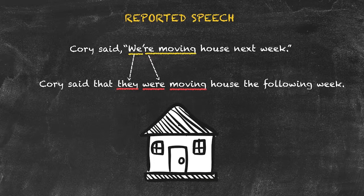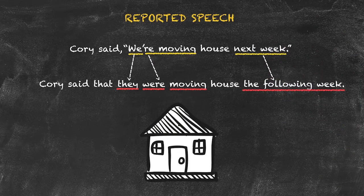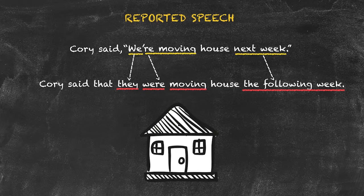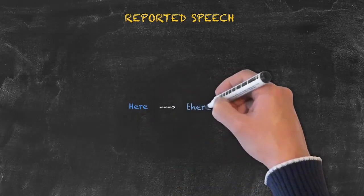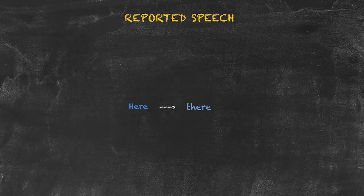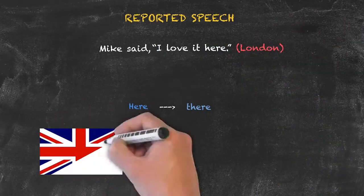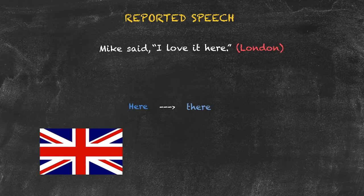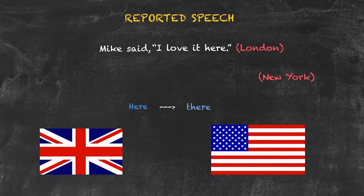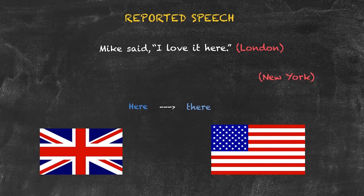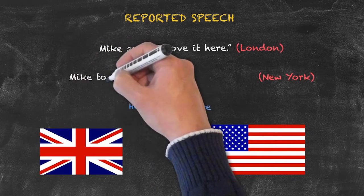Let's begin examining the backshifting of words, starting with place words. Imagine I have a friend named Mike who has moved to London. I've asked Mike what he thinks of London, and his direct quote is: 'I love it here.' However, I'm reporting Mike's speech to a mutual friend in New York. It wouldn't make much sense to say 'Mike loved it here' — I'm in New York, but we're talking about London. So we change 'here' to 'there.' The result is: 'Mike told me that he loved it there.'